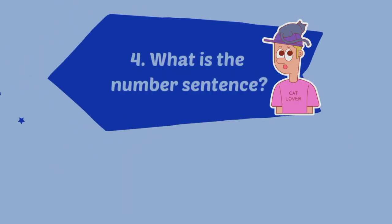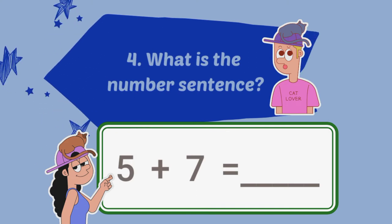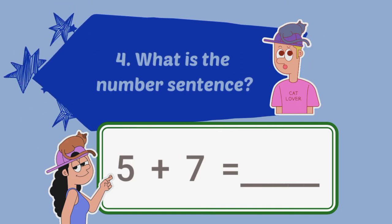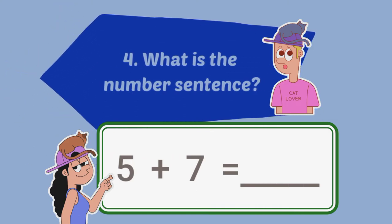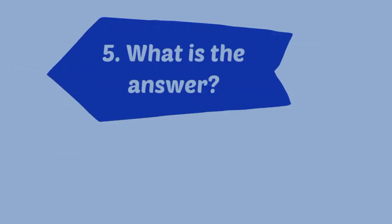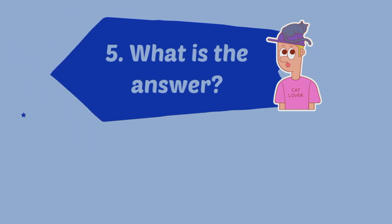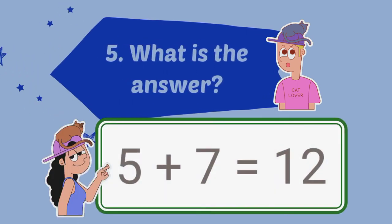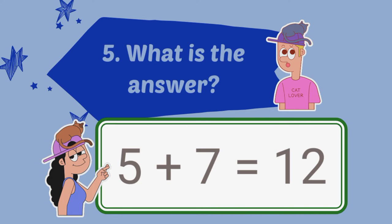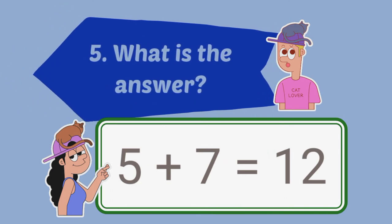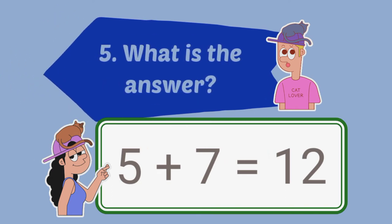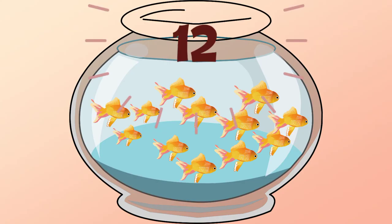What is the number sentence? Five plus seven equals — what is the answer? Five plus seven equals twelve. Twelve goldfish will be in the aquarium.